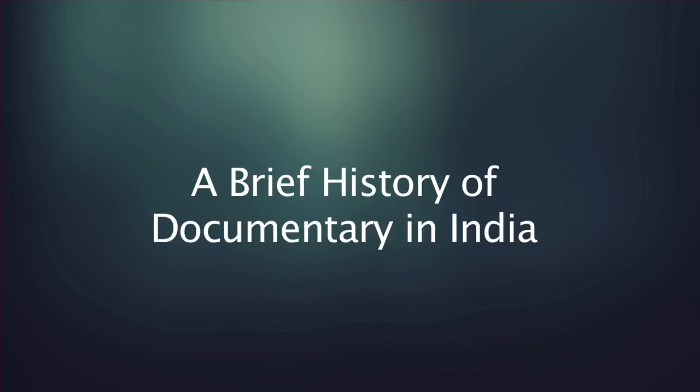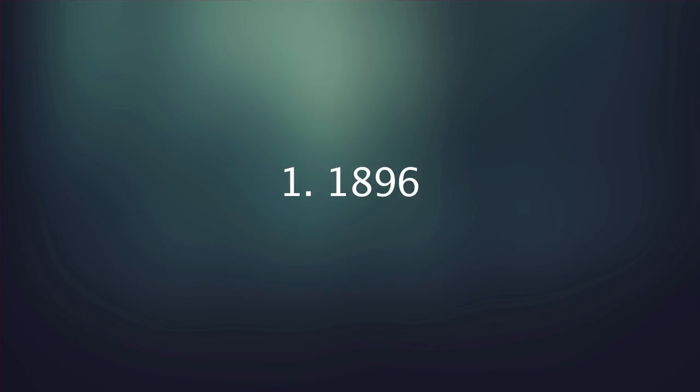A Brief History of Documentary in India. 1896: Almost one year after Lumiere Brothers showcased one-minute films in Paris, cinema came to India — Lumiere Brothers' films started being showcased in Bombay. The audience paid 8 annas to 1 rupee to watch those films. Soon, tents and open spaces were used to show films to the people of India. These films were made by foreign tourists who visited India and showcased the landscape and the life of the people in colonial India.